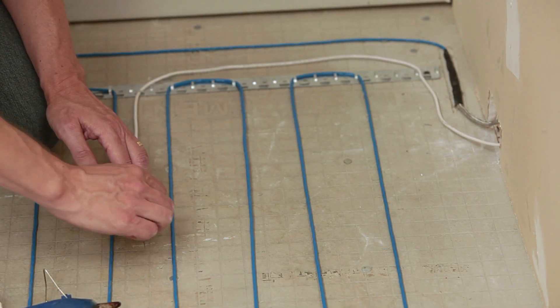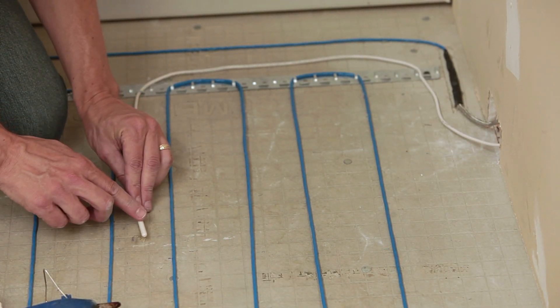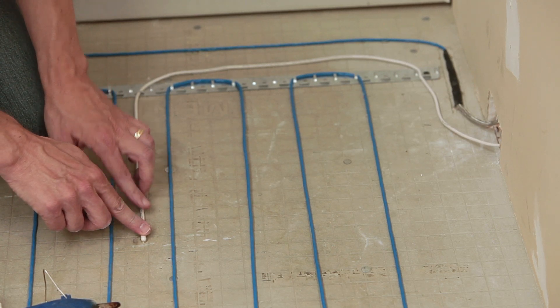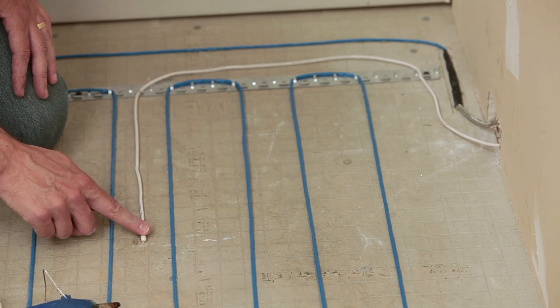Position the floor sensor parallel to and in between the heating elements. Do not run sensor wire across heating elements. Attach the sensor to the floor with a small amount of hot glue.